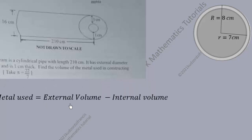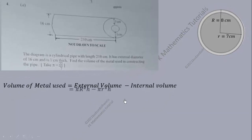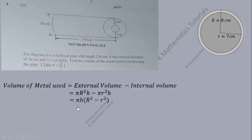The volume of the metal used equals external volume minus internal volume. The volume of a cylinder is pi r squared h — we use big R for the external cylinder and small r for the internal cylinder. We can factor pi and h out, giving us pi × h × (R² − r²), where big R squared minus small r squared.